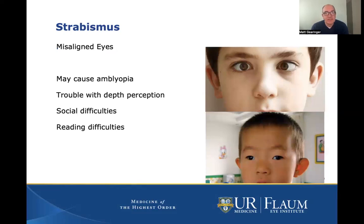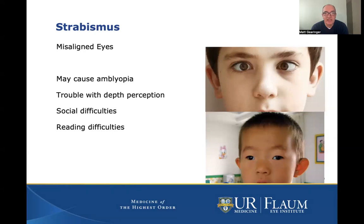The next topic is strabismus, which is a general term for misaligned eyes. The eyes can either turn in, like the photo above, or out, like the photo below. This may lead to lazy eye or amblyopia as well. These children, if the eye turn is constant, can have trouble with depth perception, which might make coordination and sports difficult for them. Often they'll have social difficulties, especially as they get into older grades. Junior high kids with misaligned eyes are often bothered by their appearance.